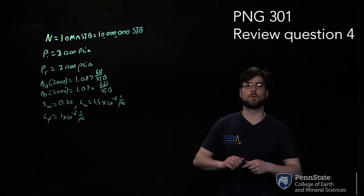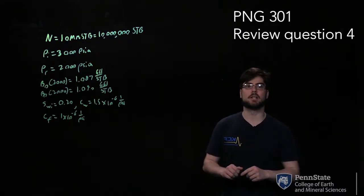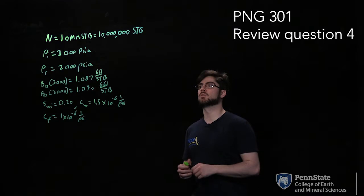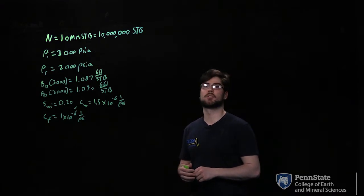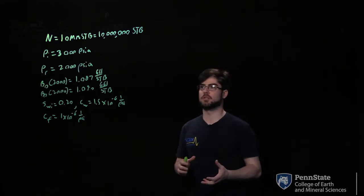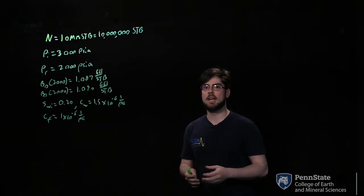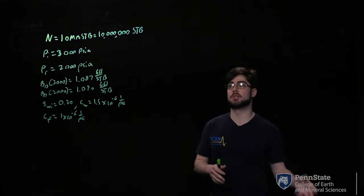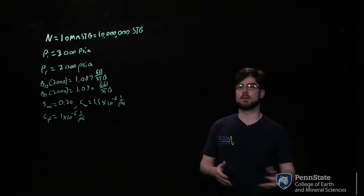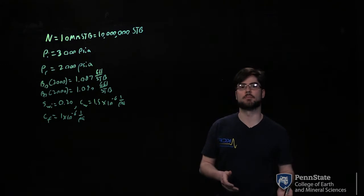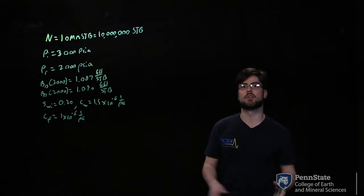For this problem, we're going to be calculating our cumulative oil production, which is denoted as NP. We're given 10 million stock tank barrels originally in place in the reservoir. We have an initial pressure of 3,000 psi, and after some time of production, our pressure at a certain time is going to be 2,000 psi. As production occurs, pressure in your reservoir will deplete as reservoir fluids leave the system.